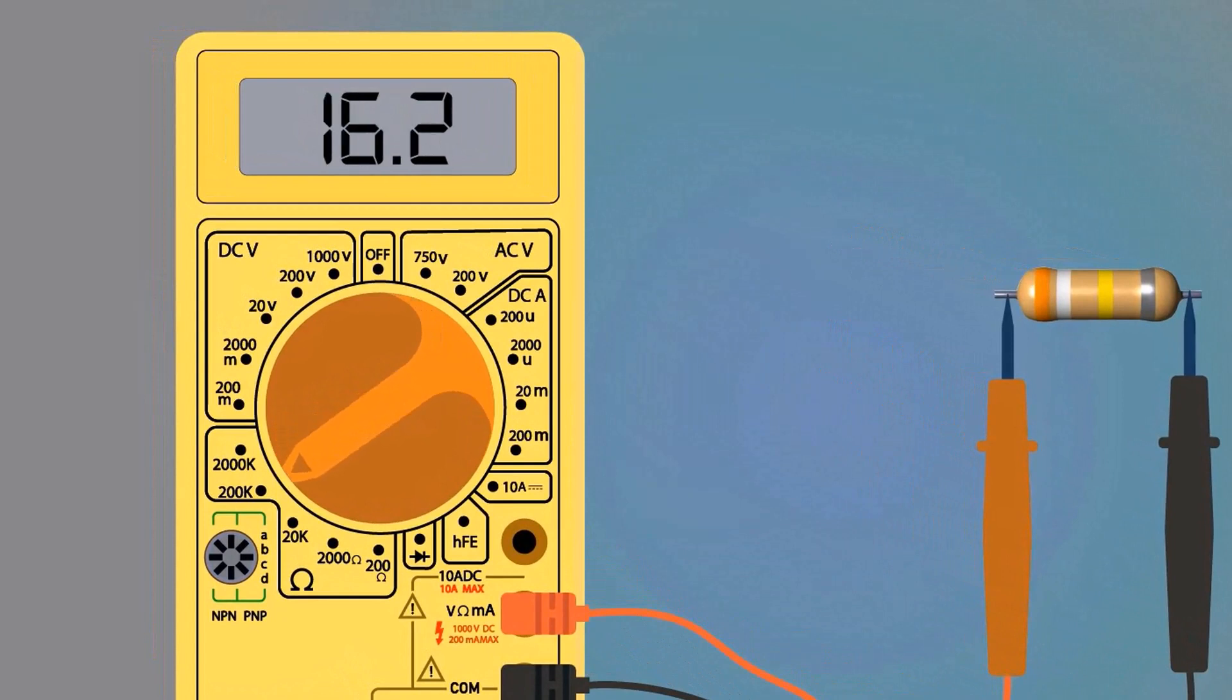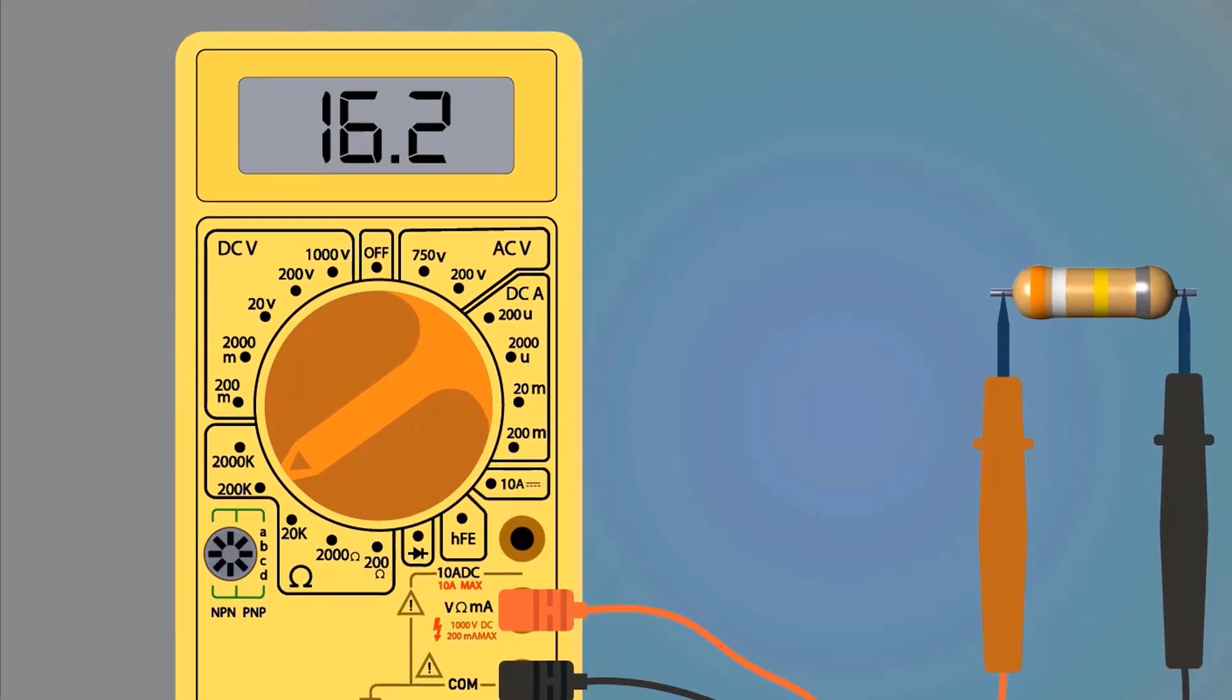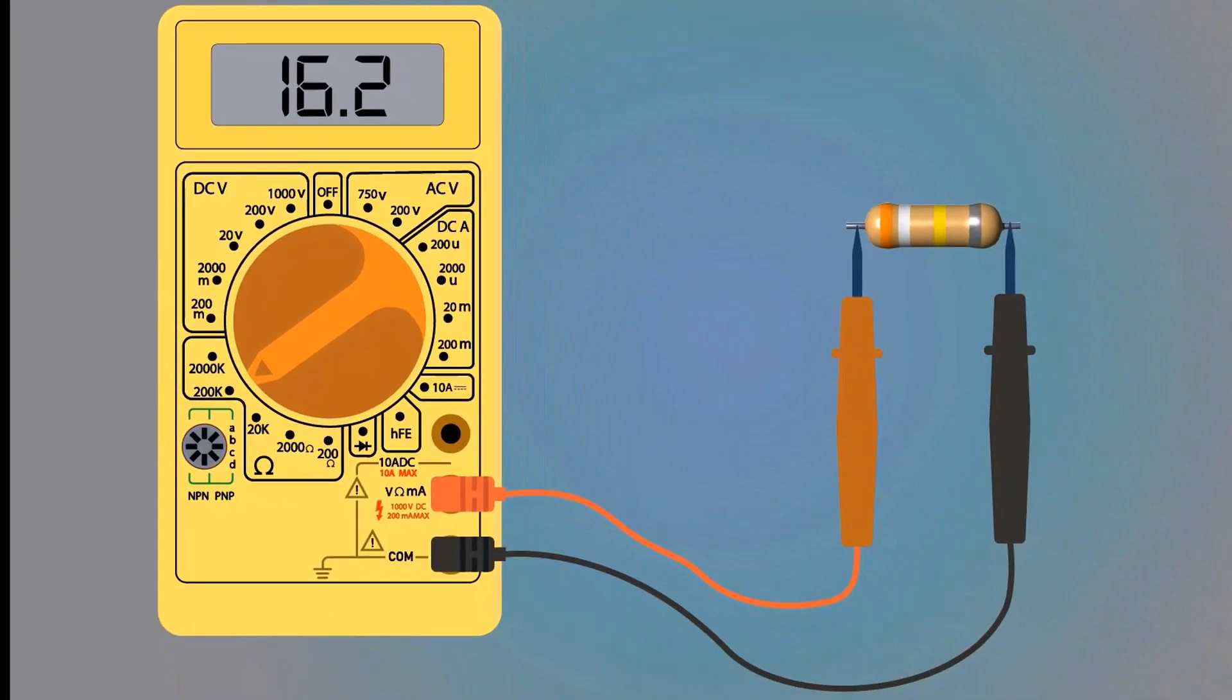We have selected 200k. At this range the display shows 16.2 kilo-ohm value. We know that 16.2 kilo-ohms is less than 20 kilo-ohms.